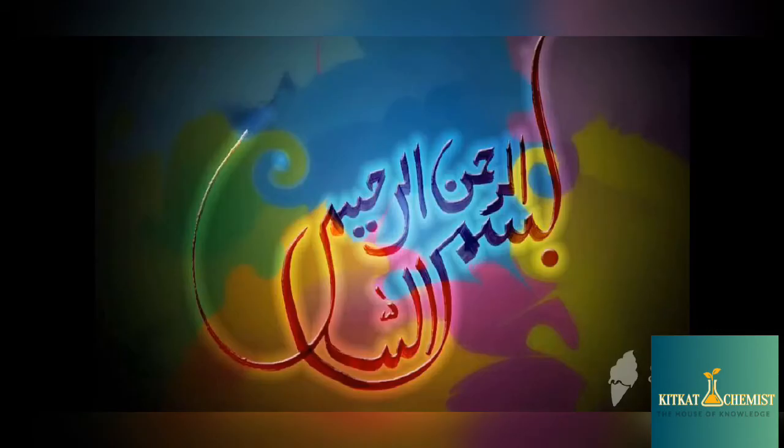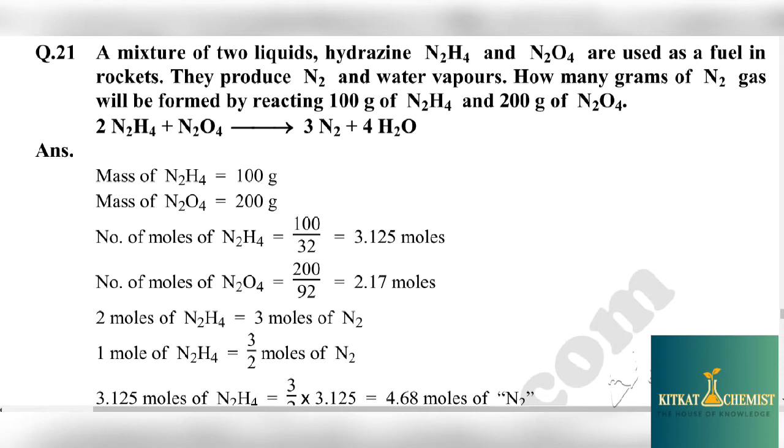Let's start the topic. Question number 21: A mixture of two liquids, hydrazine N2H4 and N2O4, are used as fuel in rockets. They produce nitrogen and water vapors. How many grams of nitrogen gas will be formed by reacting 100 gram of N2H4 and 200 gram of N2O4? This question asks how many grams of nitrogen gas is produced if 100 gram N2H4 and 200 gram N2O4 react. This means we have to find out the limiting reactant.